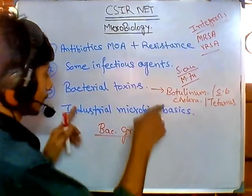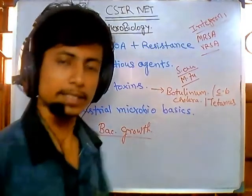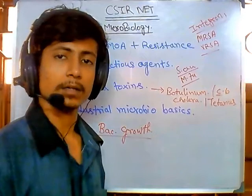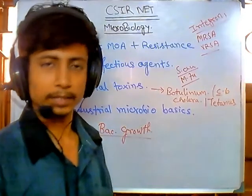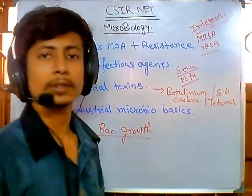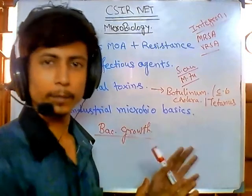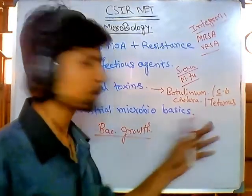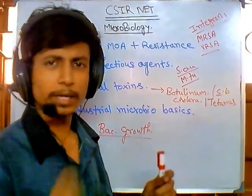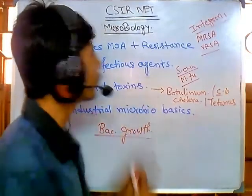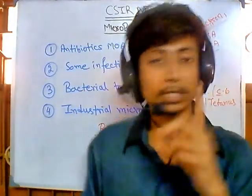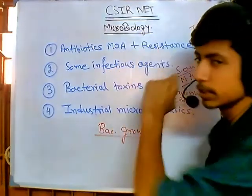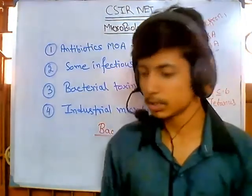This relates to industrial microbiological basics — what different products are produced using microbial technology. A little about food microbiology, coliforms, and water microbiology is also included. Overall, antibiotics mode of action and resistance is the most important part, and that's where most exam questions will come from.